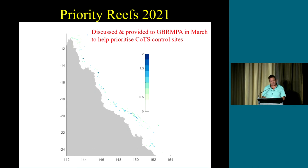This data set, these layers, were provided to Gabrumpa in March as part of their ongoing identification of COTS control prioritizations. As Roger said earlier, there's a whole series of data considerations in making those decisions. This is one of them.